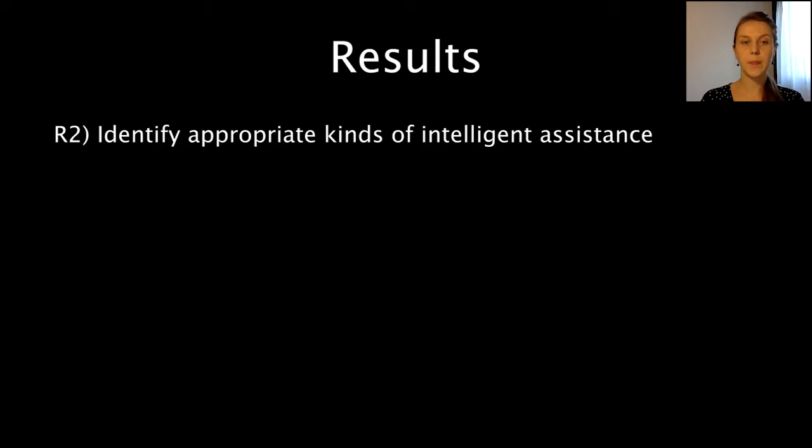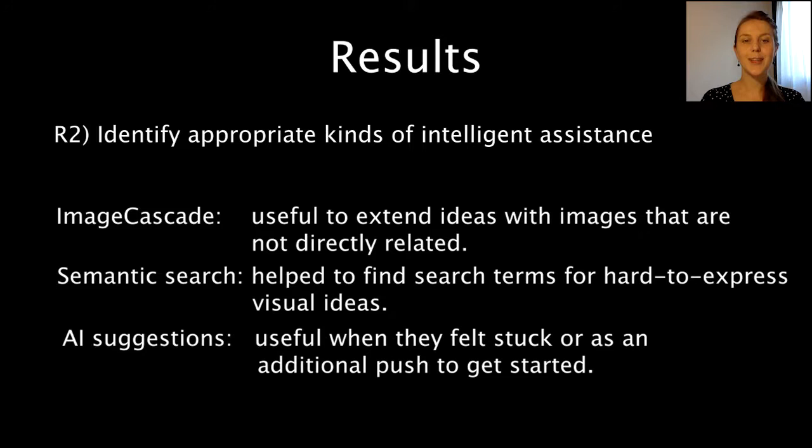In our second research question, we tried to identify appropriate kinds of intelligent assistance for such a process. ImageCascade was deemed especially useful to extend ideas with images that are not directly related and can't be actively searched. Semantic search helped, in contrast, to find search terms for how to express visual ideas. The AI suggestions were especially useful when designers felt stuck or as an additional push to get started.